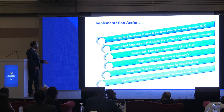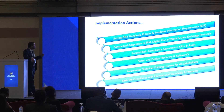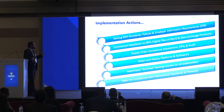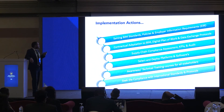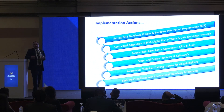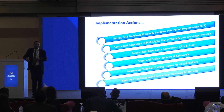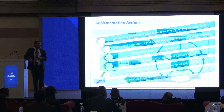For implementation actions — a quick to-do list for BIM implementation — this includes: setting the BIM standards, policies and the EIR; contractual adaptation to BIM; the digital plan of work and data exchange protocols; supply chain assessment; KPIs; the audit and the way you evaluate how your supply chain is doing their job; select and deploy platforms and software; awareness and technical training for all your stakeholders, not only your team, because whoever works with you should be aligned with your level. Seek compliance with international standards such as ISO 19650, which is published and can be used as a reference for the implementation itself.